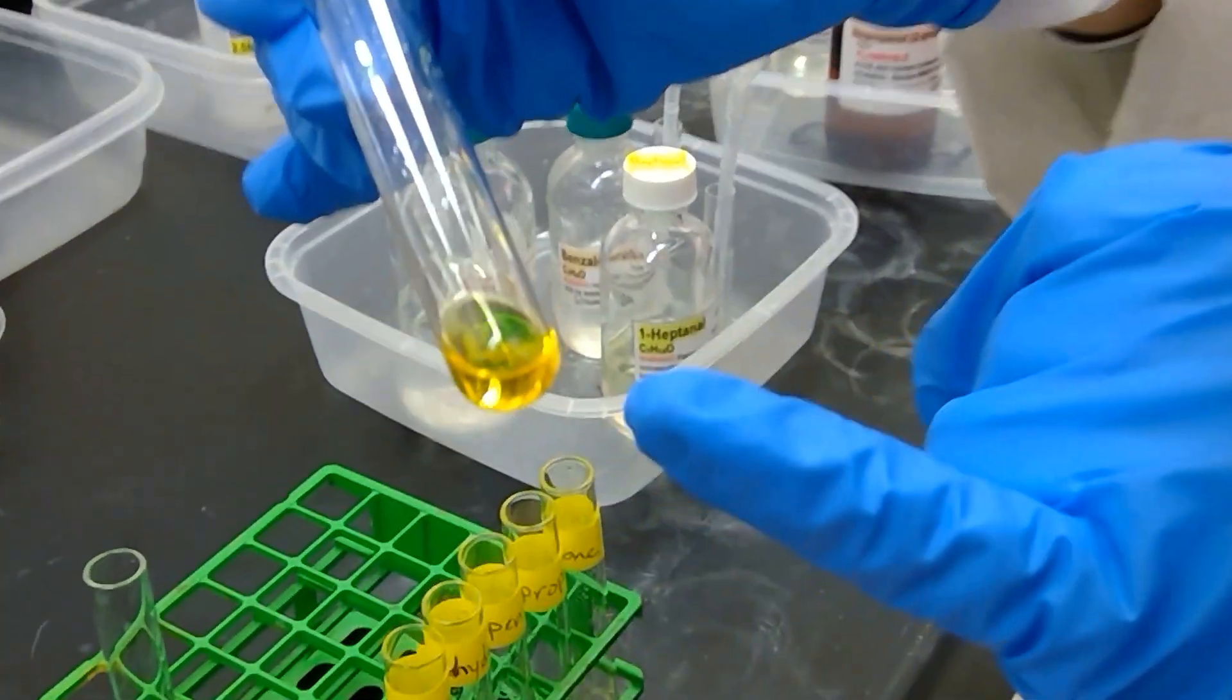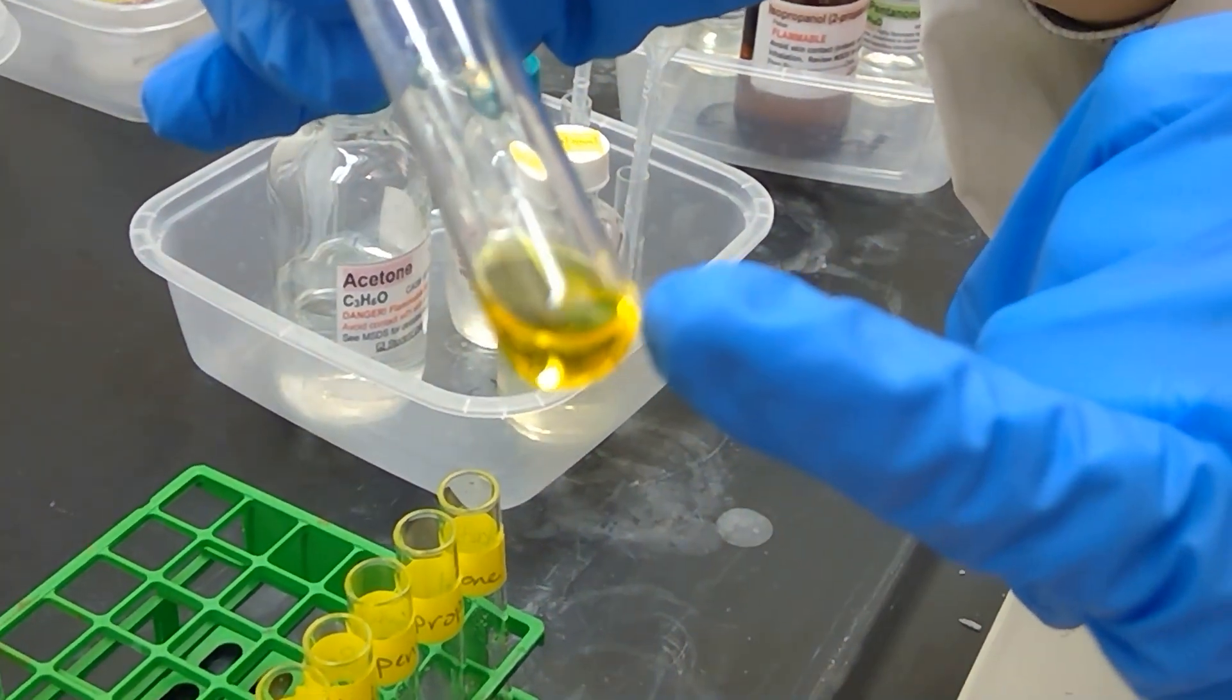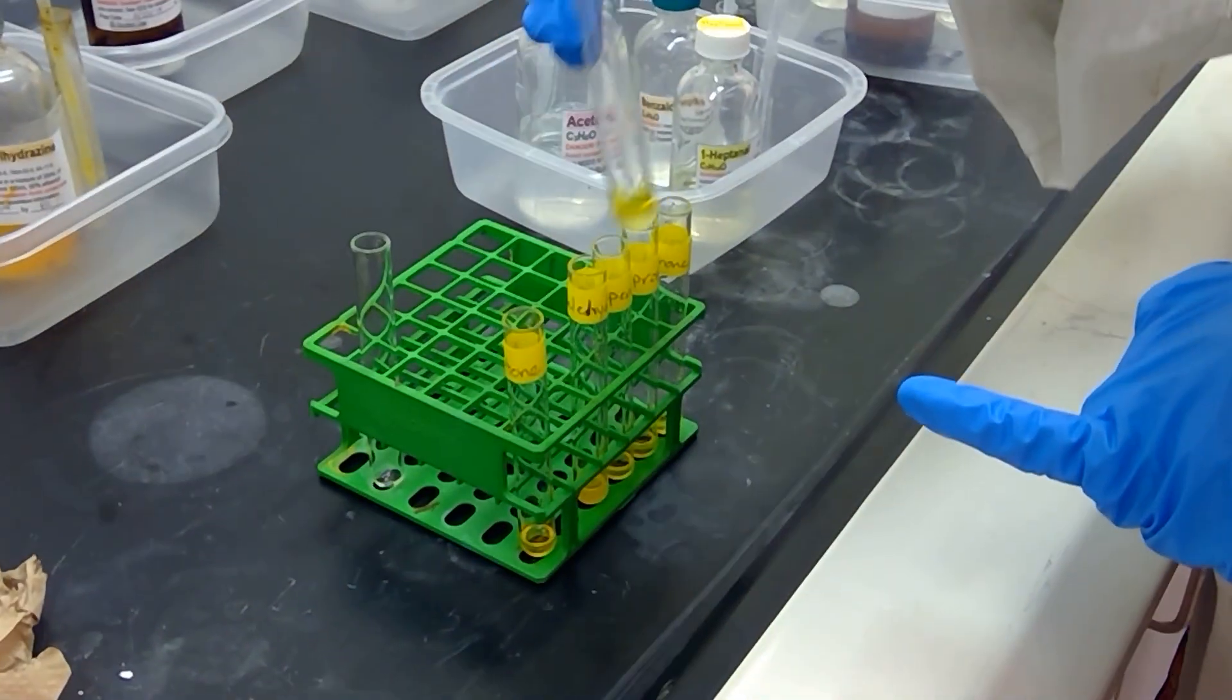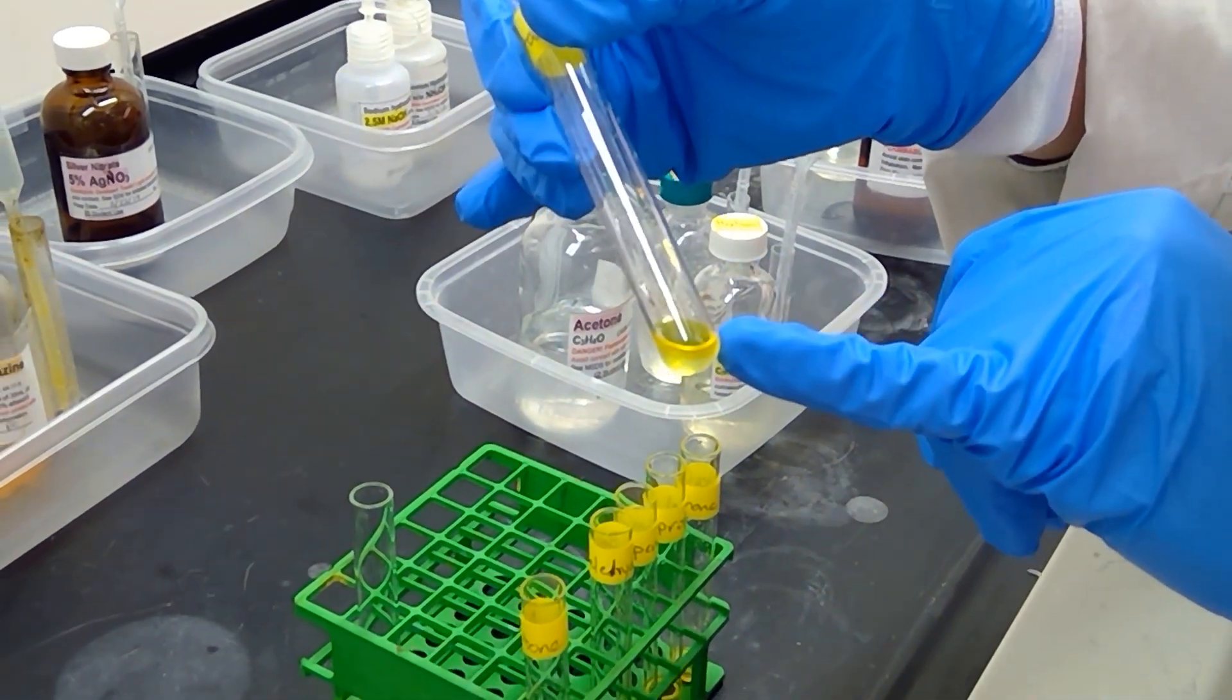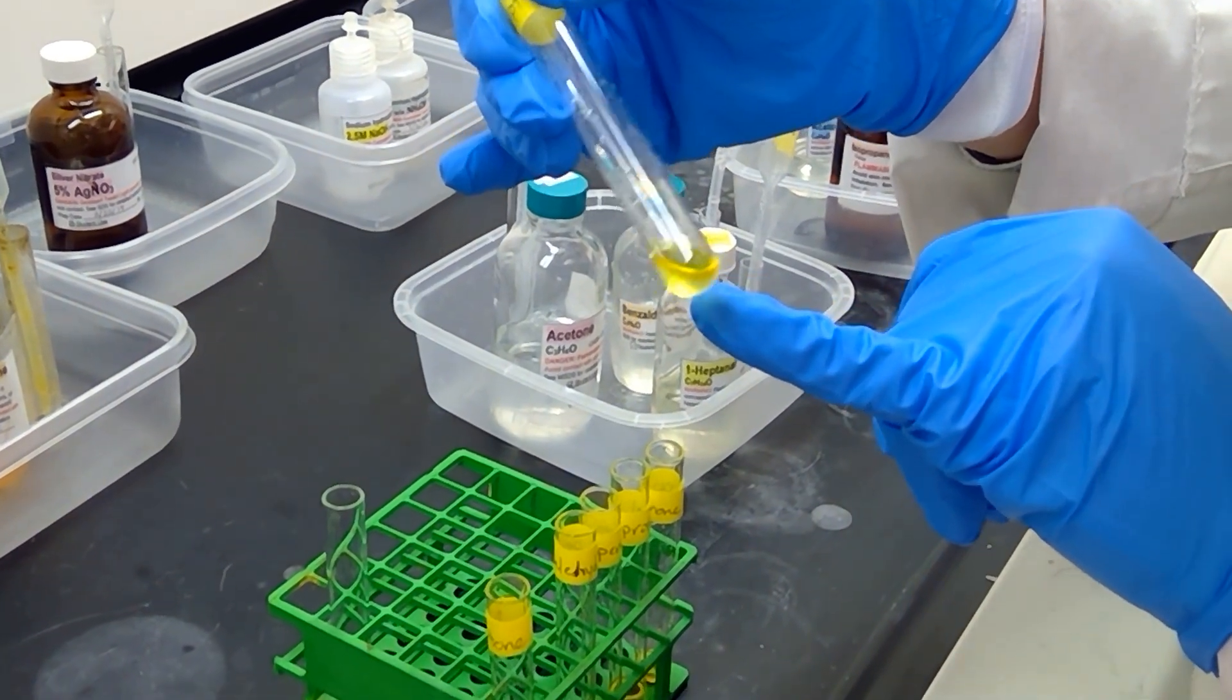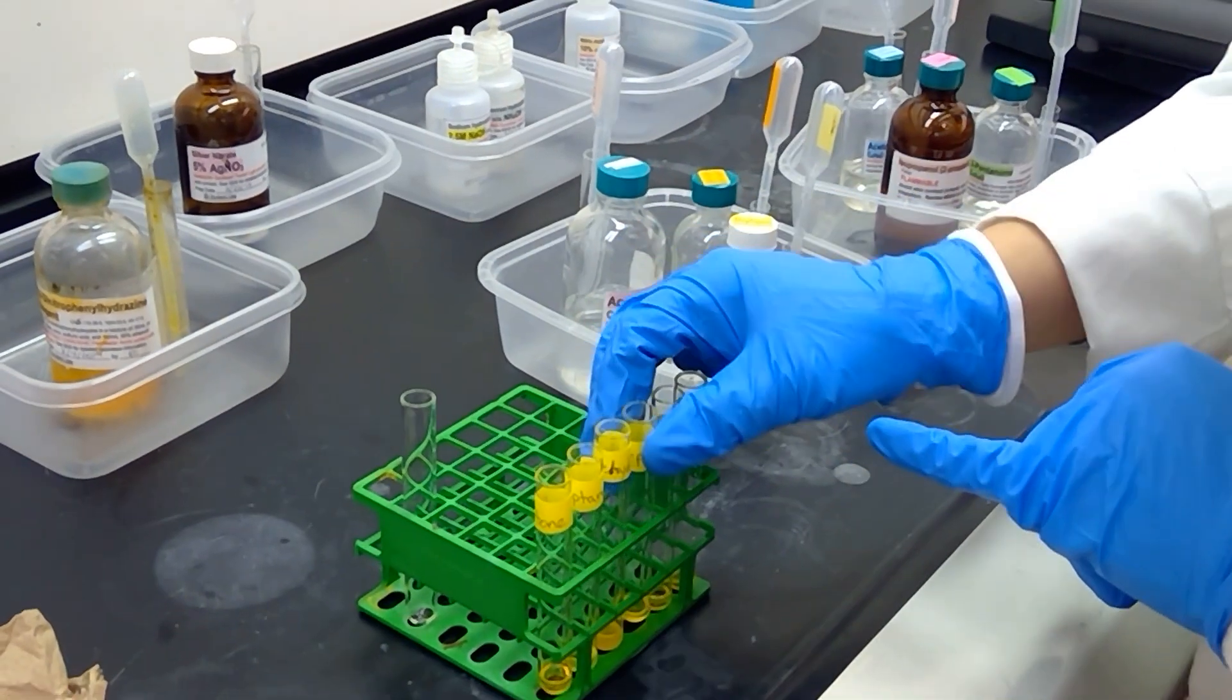Our acetone sample is also showing some more of that orangey-red precipitate at the bottom of the test tube. Let's take a quick look at heptanol. Heptanol looks kind of like a two-layer system, like a viscous, oily substance towards the top. Let's take a look at our next three samples.